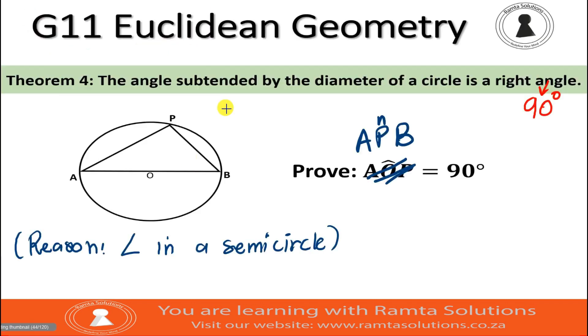So we will prove that angle APB equals 90 degrees. What you know is that angle AOB is equal to 180 degrees. Let's look at it. Angle AOB. It is equal to 90 degrees, but preferably this. It is 90 degrees.